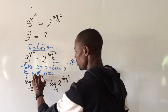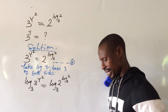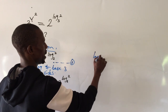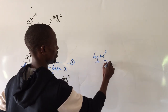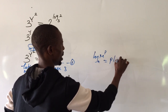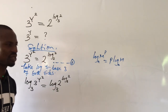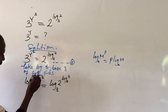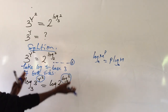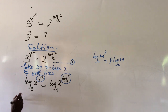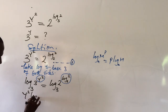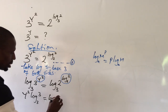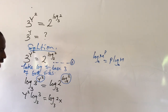According to the power law of logarithms, we can move the powers back. The law states that whenever you have log m to the power of p, this is the same thing as p log m. So if we bring this expression here, we move the powers backward. This is going to give us: y to the power of 2 times log 3 base 3, equals log 2 base 3 times log 2 base 3.